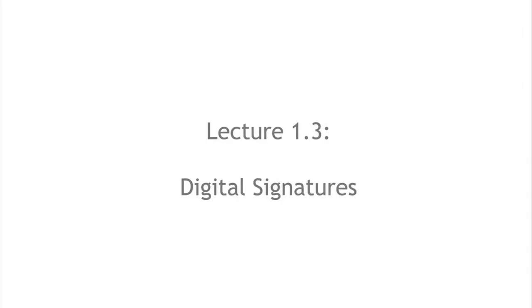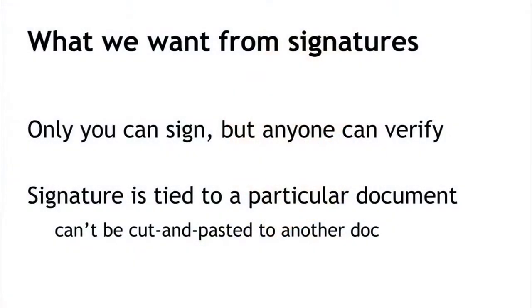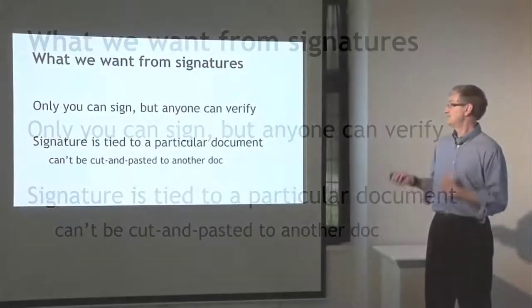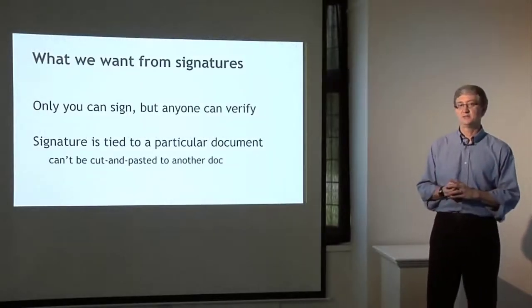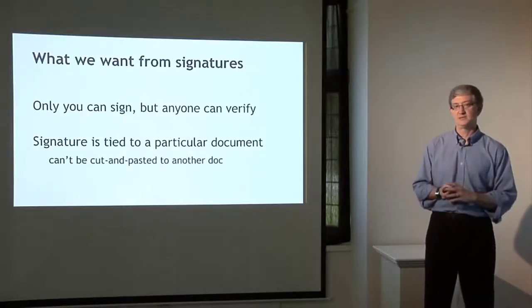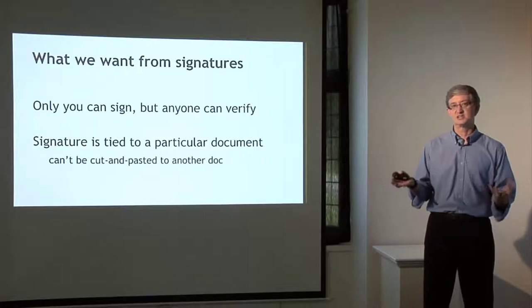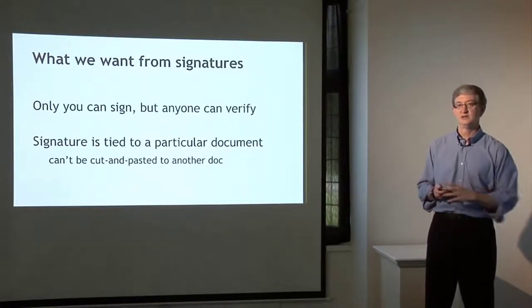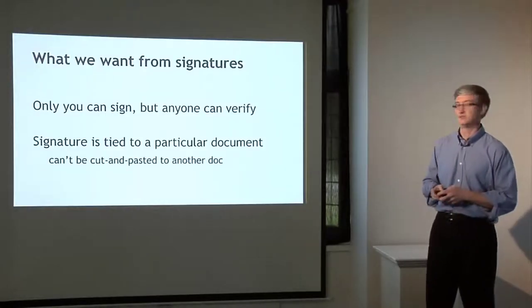In segment 1.3, we're going to talk about digital signatures — the second cryptographic primitive, along with hash functions, that we need for the cryptocurrency discussion. A digital signature is supposed to be just like a signature on paper, only in digital form. We want two things: first, only you can make your signature but anyone who sees it can verify it's valid; and second, the signature is tied to a particular document so nobody can snip your signature off one document and glue it onto another.